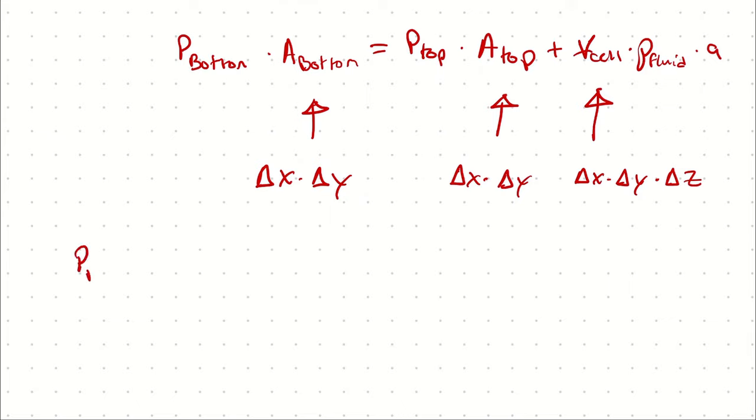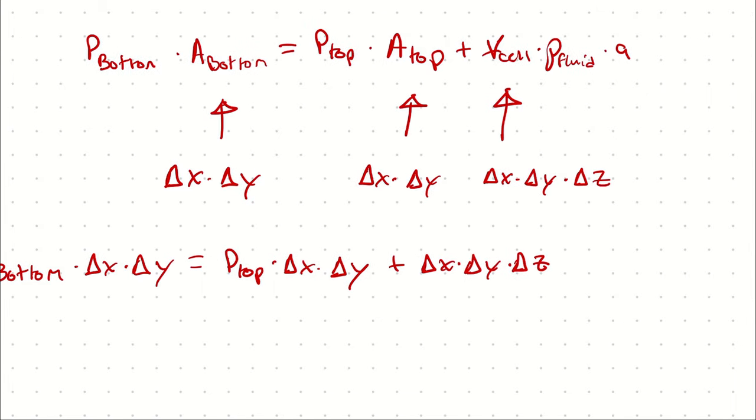Then I can describe the pressure at the bottom times Delta X times Delta Y as equal to the pressure at the top times Delta X times Delta Y, plus Delta X times Delta Y times Delta Z times the density of the fluid times the acceleration the fluid cell is experiencing.